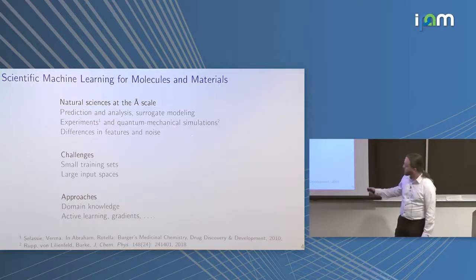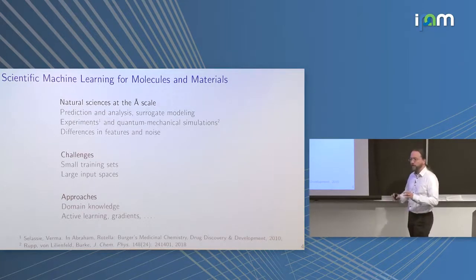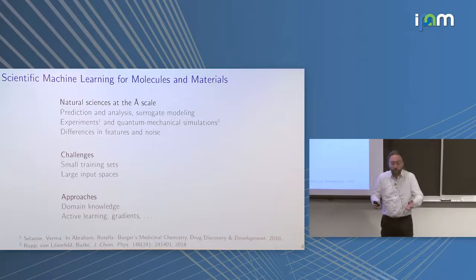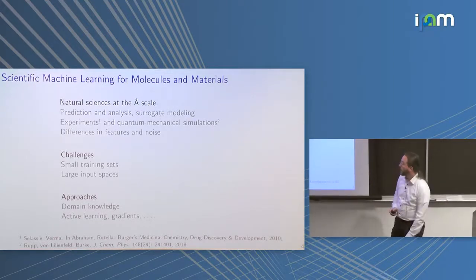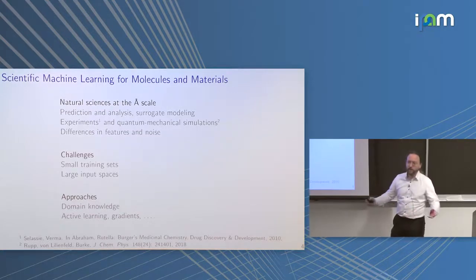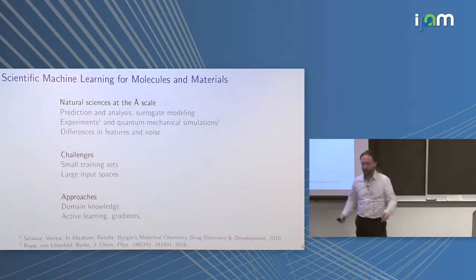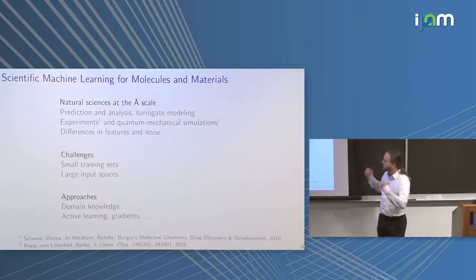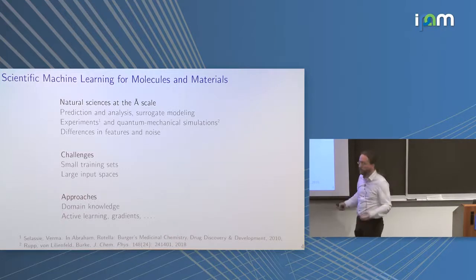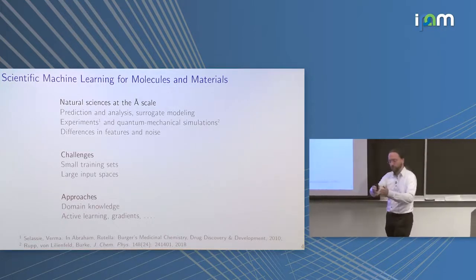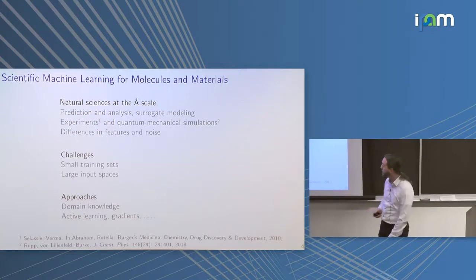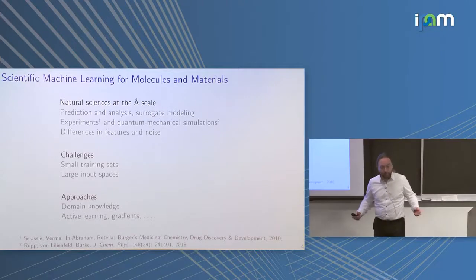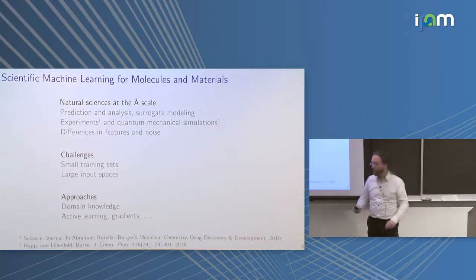For simulations, we have no noise — these are deterministic computational procedures. We have something like numerical noise beyond the convergence threshold, but that is tiny and negligible. We usually have complete information: a set of atoms and their positions in space, and we want to predict, for example, the energy. So these two settings look very similar but are not at all.